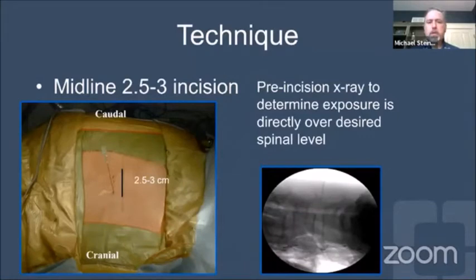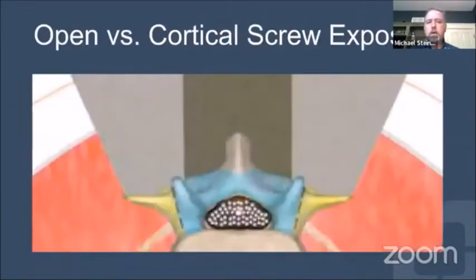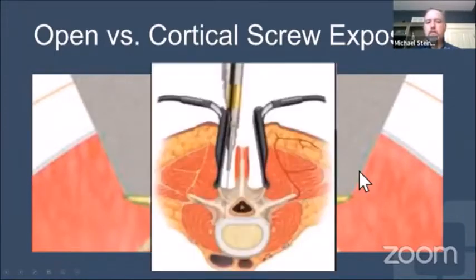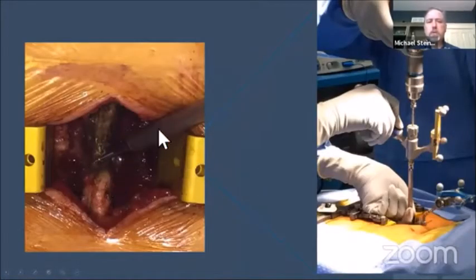For the procedure, it's a midline incision — somewhere around two and a half centimeters is all you need. I usually put a needle in the skin, as seen here, and take a quick X-ray to determine incision placement. The incision must be right over our pathology. For a traditional open T-lift, you expose from transverse process to transverse process, but with a mid-lift I just need to expose from the top of the facet to the top of the facet — a very minimal exposure, similar to a traditional open laminectomy. There are a number of retractors on the market that sit over the facet joint and allow a small access point to perform the interbody fusion.